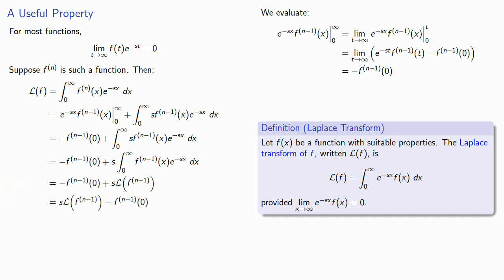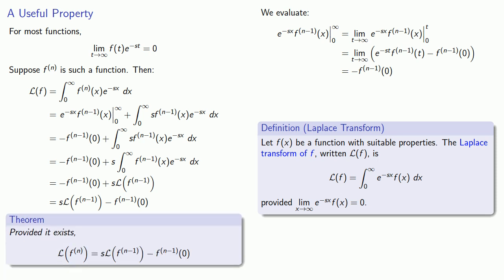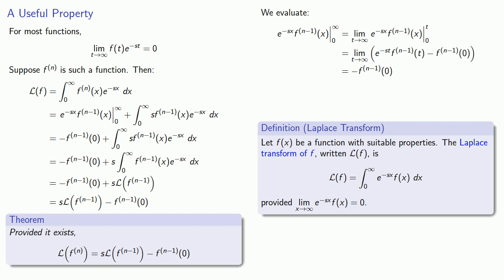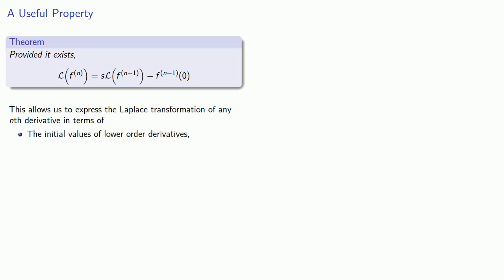This gives us a very useful result. Provided that it exists, the Laplace transform of an nth derivative is s times the Laplace transform of the n minus first derivative, minus the n minus first derivative at zero. This is an amazingly useful property, because it allows us to express the Laplace transform of any nth derivative in terms of the initial values of the lower-order derivatives and the Laplace transform of the function.